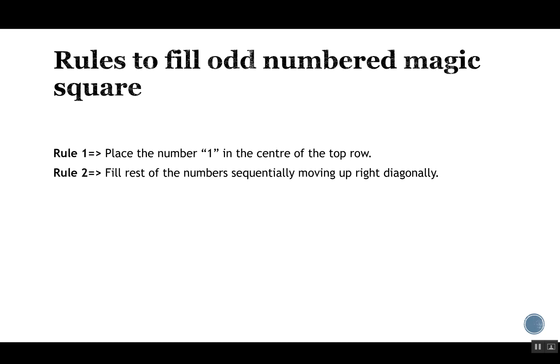Rule number two is the rule we will use most frequently. After placing number 1, we need to know where to put the next numbers. Rule two says: fill the rest of the numbers sequentially by moving up-right diagonally. So from any cell, we move one step up and one step right to place the next number.